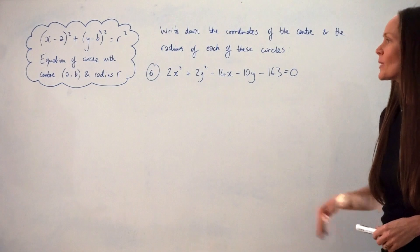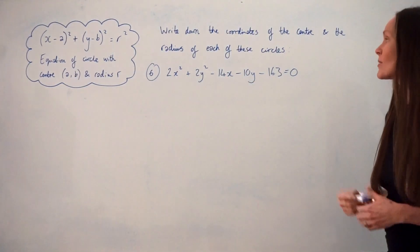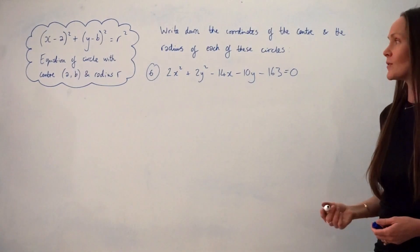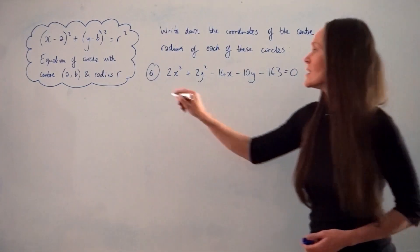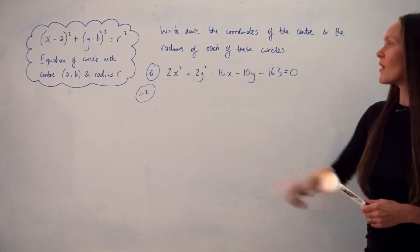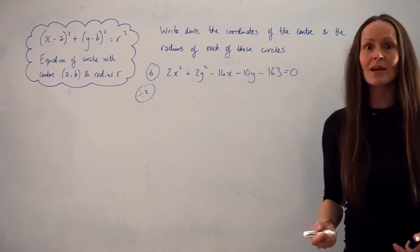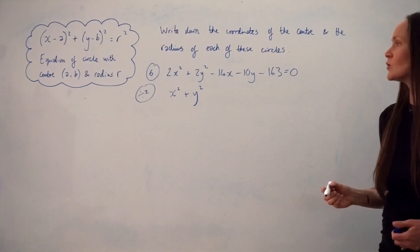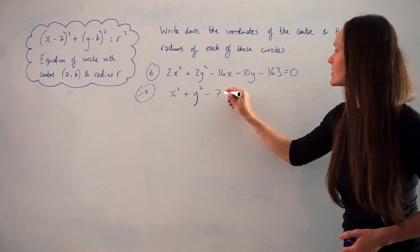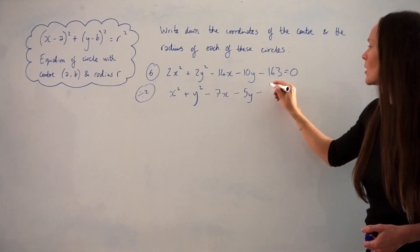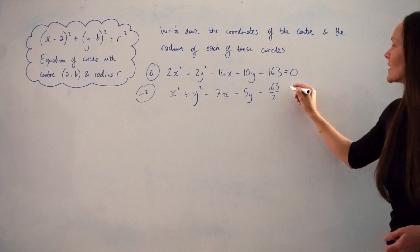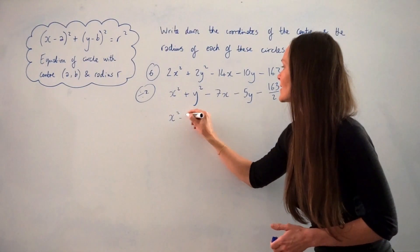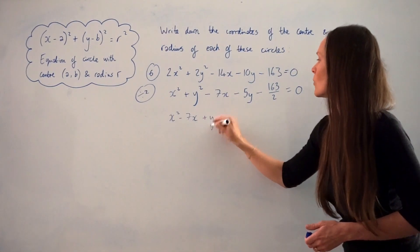In question 6, the equation of the circle is 2x squared plus 2y squared minus 14x minus 10y minus 163 equals 0. I'm going to rewrite it in completed square form to find the centre and radius. Before that, I'll divide everything by 2, so the first two terms become x squared plus y squared. Dividing the remaining terms by 2 gives negative 7x, negative 5y, and negative 163 over 2. I then group: x squared minus 7x, and y squared minus 5y.